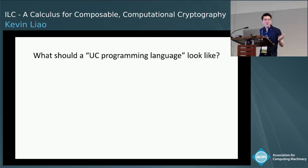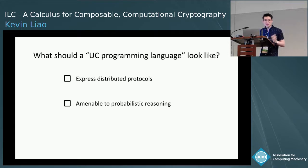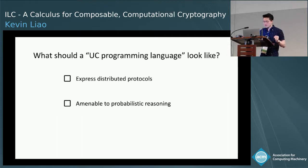What do we really want from a UC programming language? We identified two main criteria. First, it should be able to express distributed protocols. Second, it should be amenable to probabilistic reasoning, because when we write a proof of security, we're essentially bounding the probability that some bad event happens. A natural choice for the first requirement is some kind of process calculus.